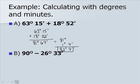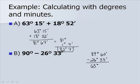Now let's subtract. We convert 90 degrees — it becomes 89 degrees 60 minutes, which is equivalent to 90 degrees — and we want to subtract 26 degrees 33 minutes. When we do the subtraction, we get 63 degrees 27 minutes.